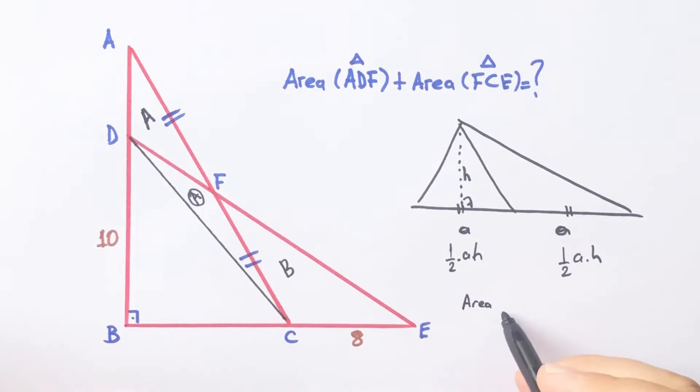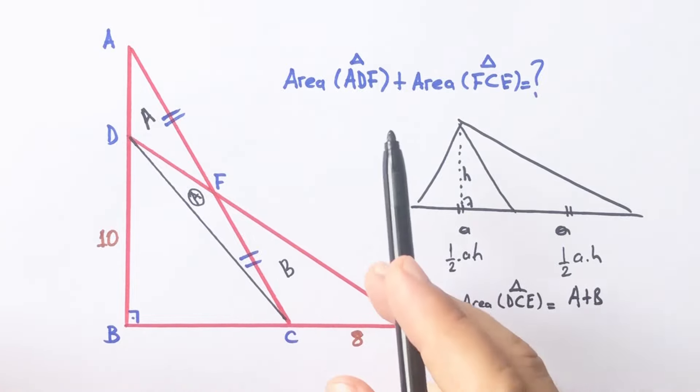So if you focus on the DCE triangle, DCE triangle area equals A plus B, right? Okay.